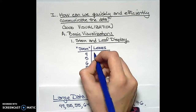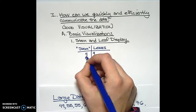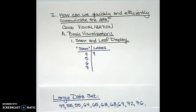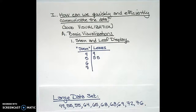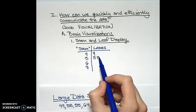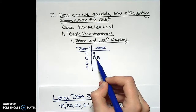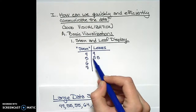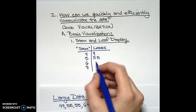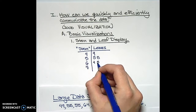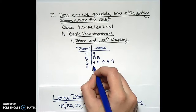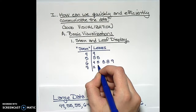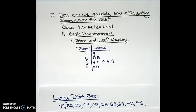In the 40s, we only have one value, 49, so we list the units digit. In the 50s, we have two occurrences of 55, so we list two values of five — this isn't to represent one 55, but two separate occurrences. In the 60s, we have 64, 65, 68, 68, and 69. And in the 70s, we have a 72 and a 76. This is what we call a stem and leaf display.